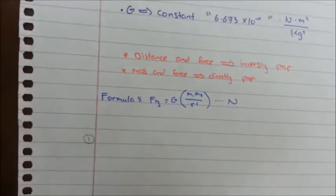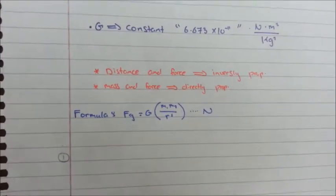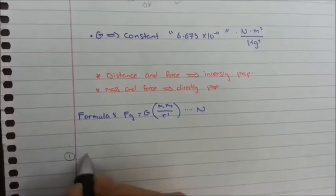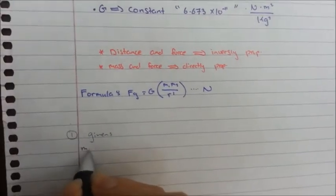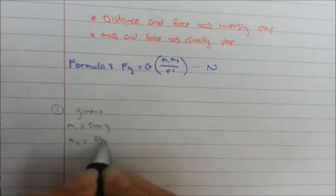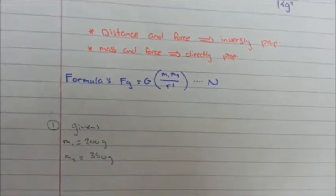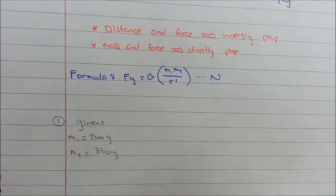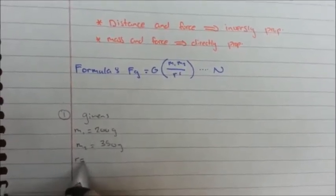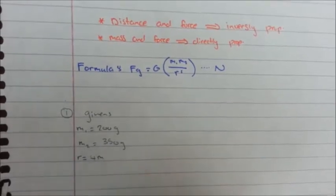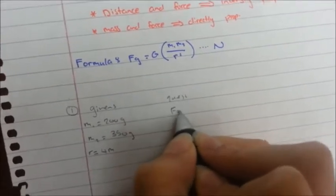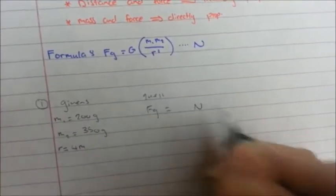Now let's start solving a question for this lesson. Given two objects of respective masses 200 grams and 350 grams, find the magnitude of the gravitational force between them if their centers are separated by a distance of 4 meters. Our givens are: M1 = 200 g, M2 = 350 g, and R = 4 m. We need to find Fg in Newtons.